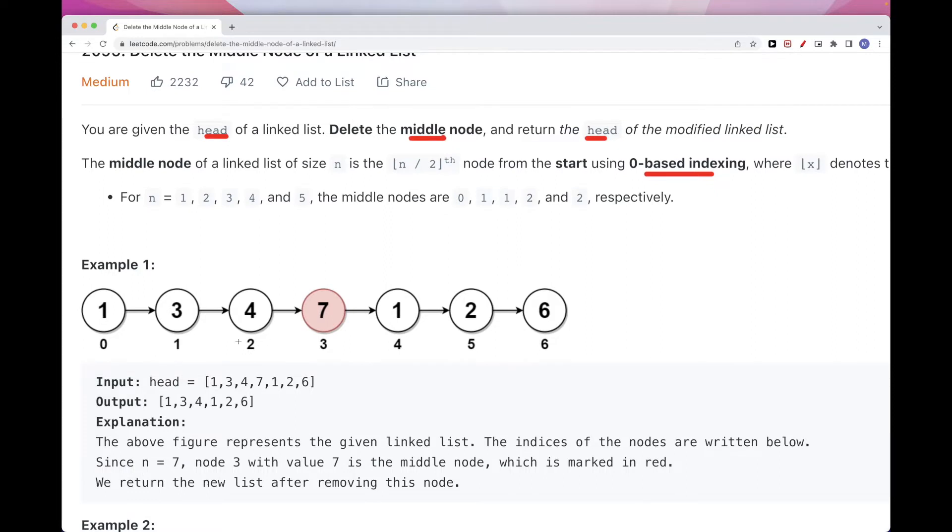So for example here, with this node linked list, then it's easy, it's just the middle. We have 3 to the left, 3 to the right, and the middle one we need to delete it, which means basically we need 4 to point to 1, and we need to remove this.